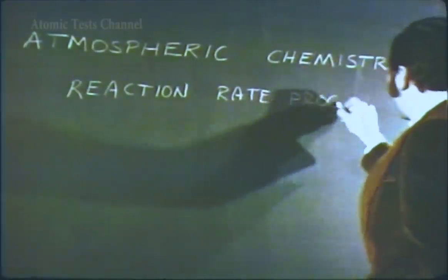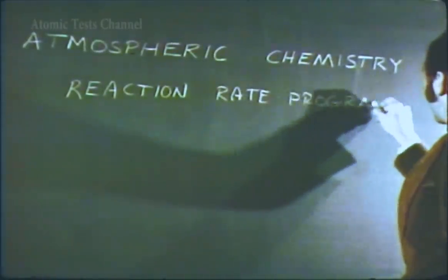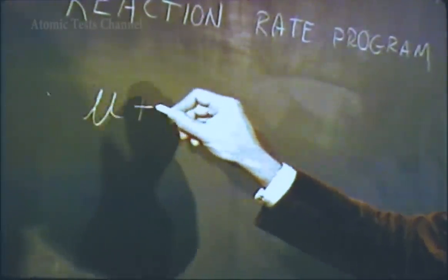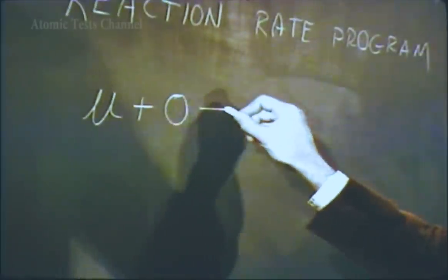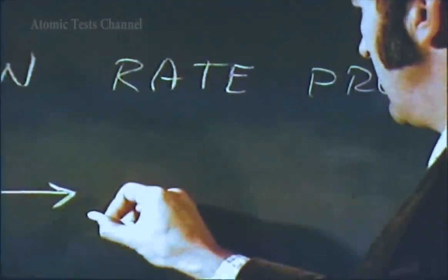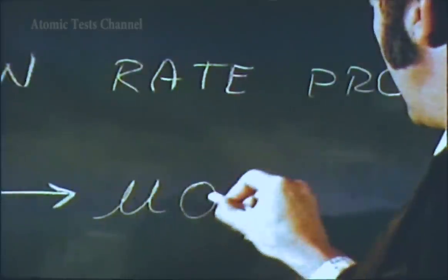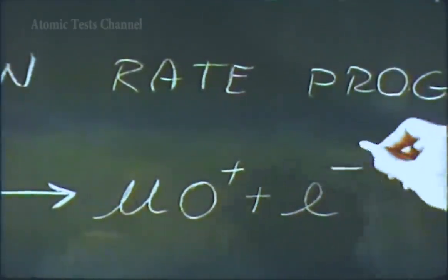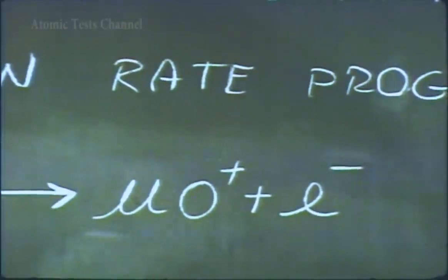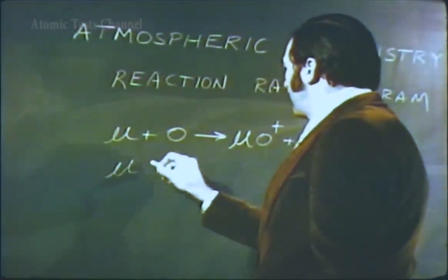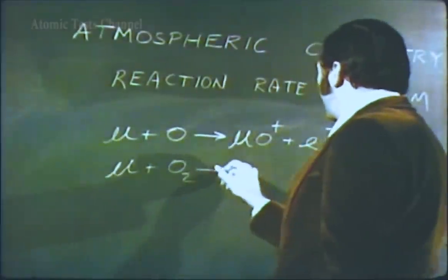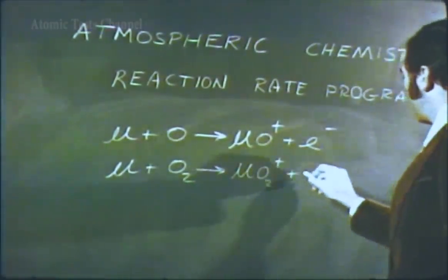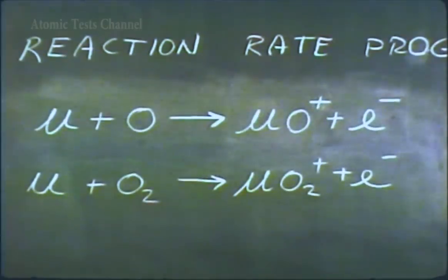One major achievement was the successful measurement in the laboratory of two reactions of uranium with oxygen. A uranium atom combining with an oxygen atom to form a uranium oxide ion plus an electron. And a uranium atom combining with an oxygen molecule to form a uranium dioxide ion and an electron.